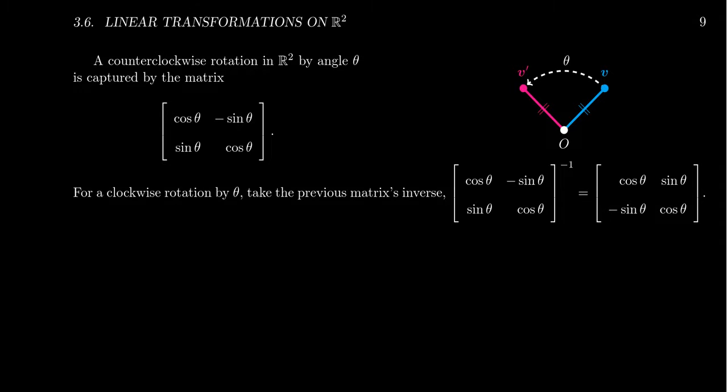So we saw previously that every 2x2 non-singular matrix can affect the plane by some combination of shears, reflections, and stretches or compressions. Those are the only three operations you need for these geometric transformations: shearing, reflection, and stretching.